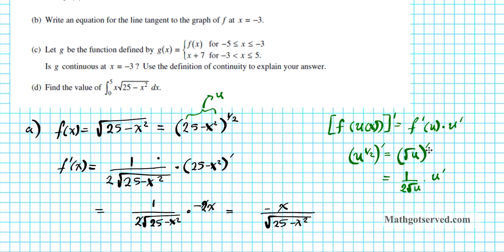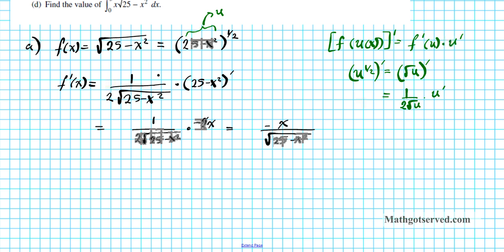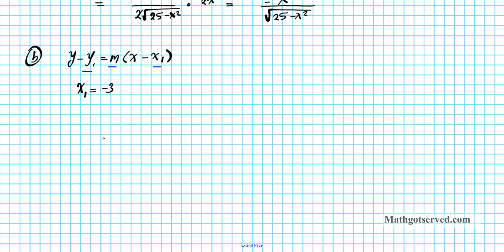For part b, we need to write the equation of a tangent line at x equals negative 3. The equation of a tangent line is y minus y1 equals m times x minus x1. We are given x1 equals negative 3. For y1, we evaluate f of negative 3: that's the square root of 25 minus 3 squared, which gives us 25 minus 9 equals 16, and root 16 equals 4.